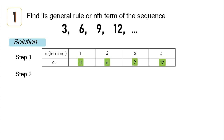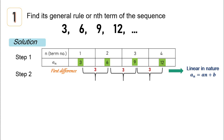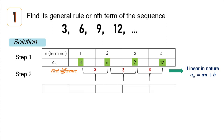Step two: we're going to find the common difference of each term. 3 and 6 has a difference of 3; 6 and 9 has a difference of 3; 9 and 12 has a difference of 3. Note that the first differences are the same, therefore this is a sequence that is linear in nature, where the nth term or general rule can be expressed as a-sub-n equals an plus b.